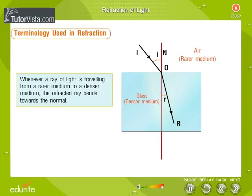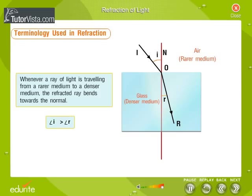Let's understand the phenomenon of refraction by studying the ray diagrams. Whenever a ray of light is travelling from a rarer medium to a denser medium, the refracted ray bends towards the normal. Here, IO is the incident ray, OR is the refracted ray, I is the angle of incidence, and R is the angle of refraction. In this case, angle I is greater than angle R.